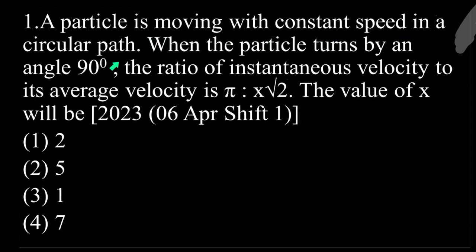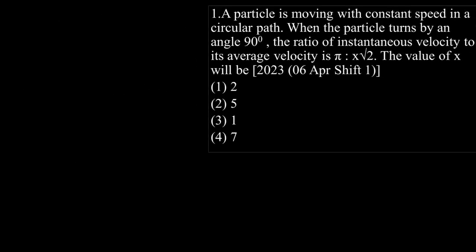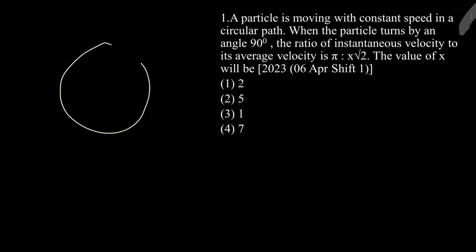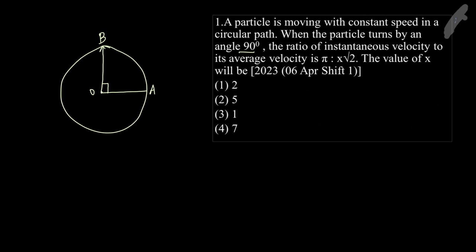A particle is moving with constant speed in a circular path. When the particle turns by an angle of 90 degrees, the ratio of the instantaneous velocity to its average velocity is π : x/√2. We need to find the value of x. The object starts from position A and turns 90 degrees to reach position B.